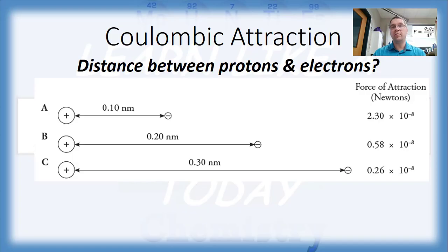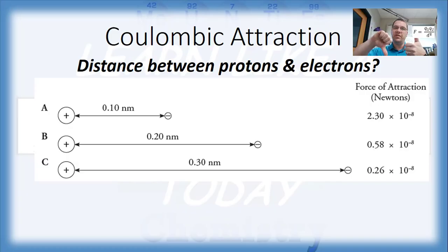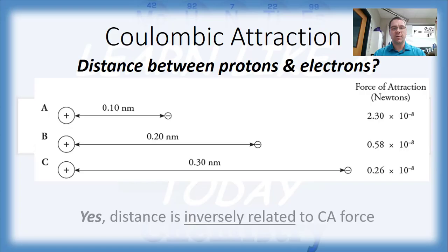When we think about what variable is being manipulated on purpose, as the experimenter you're going to vary things in a predictable, incremental way. From A to B to C, the distance is increasing and the force of attraction is decreasing. One variable is increasing while the other is decreasing — when they go in opposite directions, we say that is an inverse relationship. So based on this data, distance is inversely related to the Coulombic attractive force.